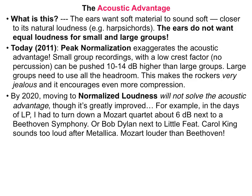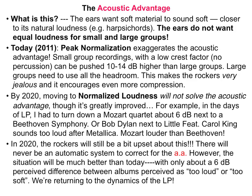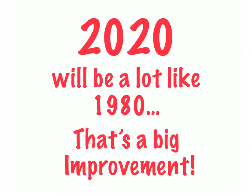By 2020, moving to normalized loudness will not solve the acoustic advantage, although it's greatly improved. For example, in the days of LP, I had to turn down a Mozart string quartet about 6 dB next to a Beethoven symphony, or a Bob Dylan solo recording next to Little Feat. Carole King sounds even louder than Metallica, and Mozart sounded louder than Beethoven. In 2020, the rockers will still be a bit upset about this, because there will never be an automatic system to correct for the acoustic advantage. However, the situation will be much better than today, with only about a 6 dB perceived difference between albums perceived as too loud or too soft. We're returning to the dynamics of the LP, where differences between the loudest and softest programs will be no more than about 6 dB. In fact, 2020 will be a lot like 1980 — and that's a big improvement.